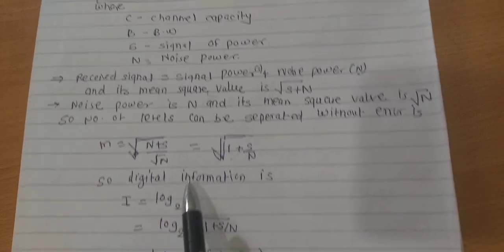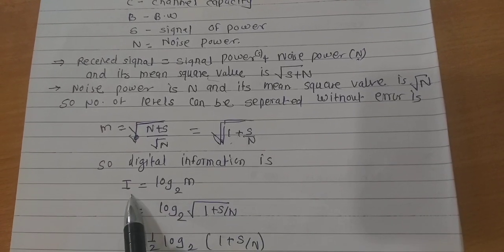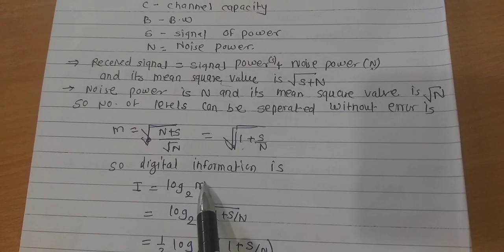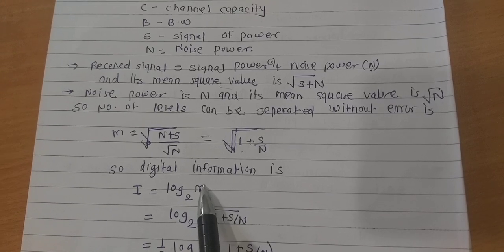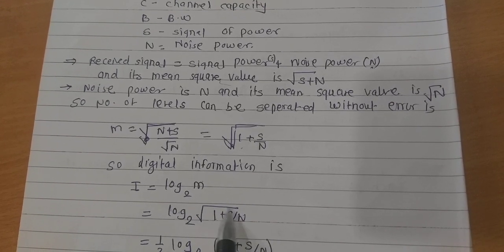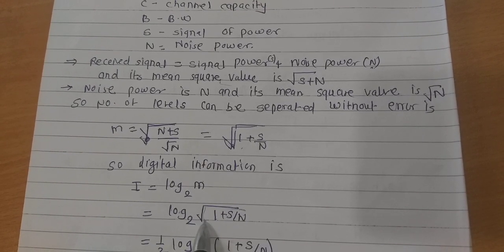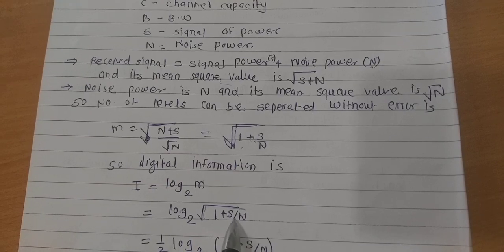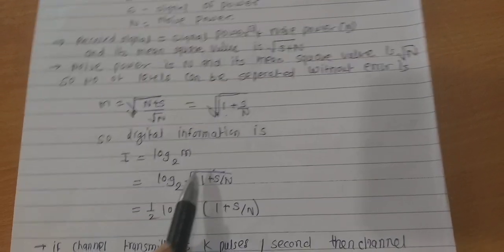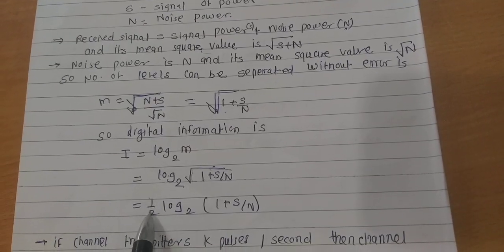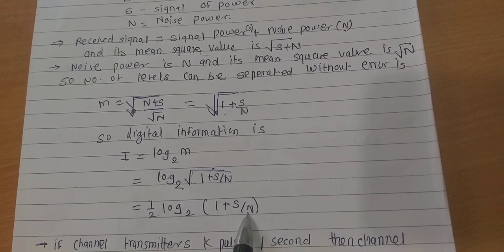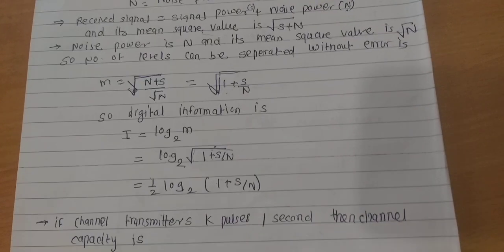The digital information is the log of M, the total number of levels. So that is log₂(√(1 + S/N)), and this square root gives us (1/2) log₂(1 + S/N).